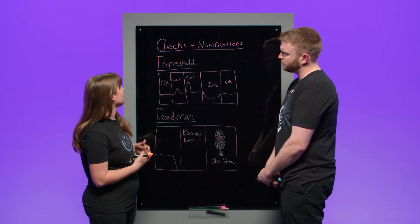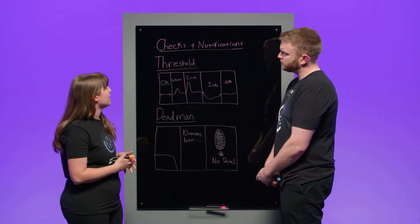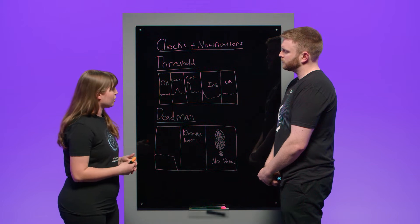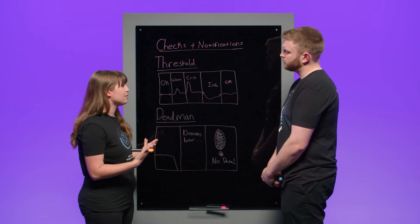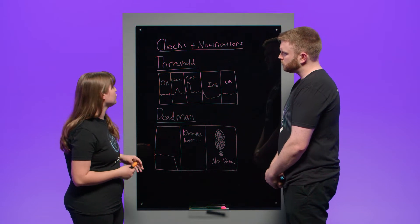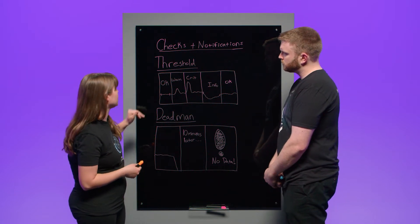So Zoe, first things first, what is a check? So a check is a query that assigns a status to the data, which is just to preface, checks are different than notifications, although they are used together. They are separated, not only in our UI, but just in theory as well. But first we're going to go over our two main check options, which are threshold and deadman.